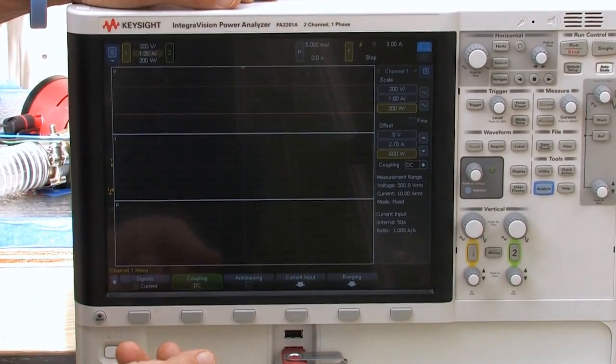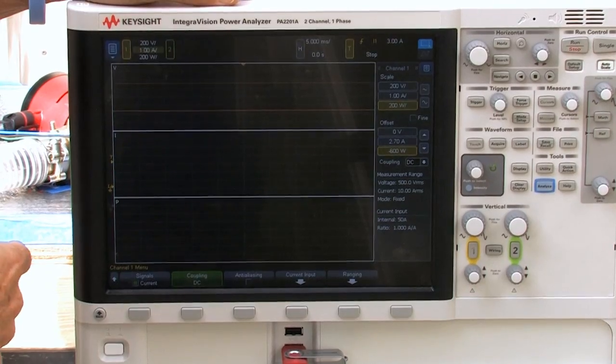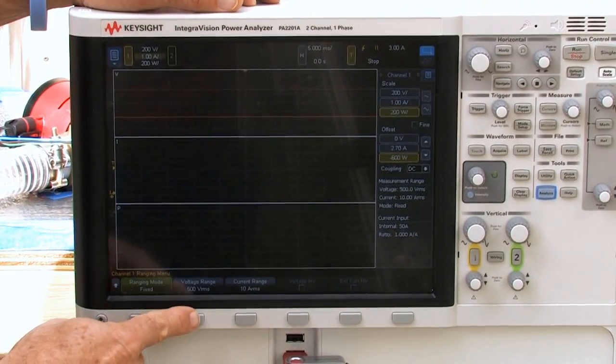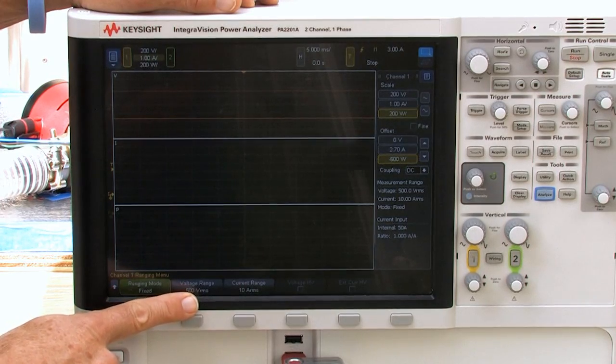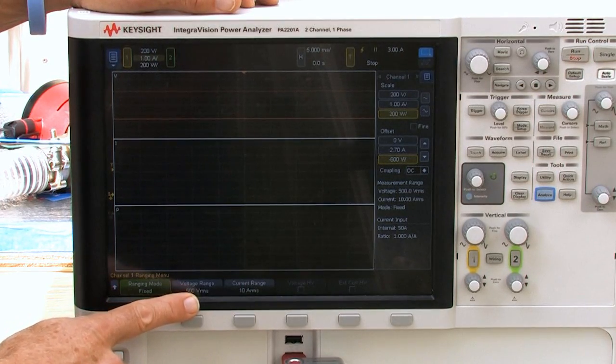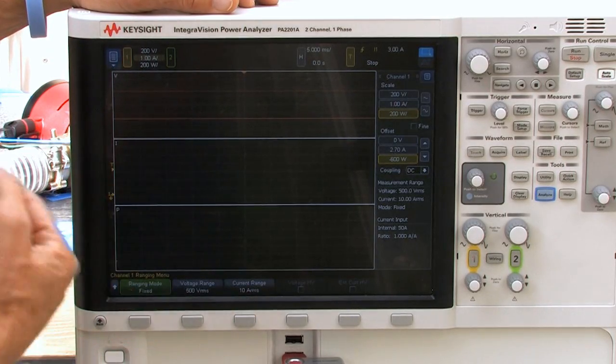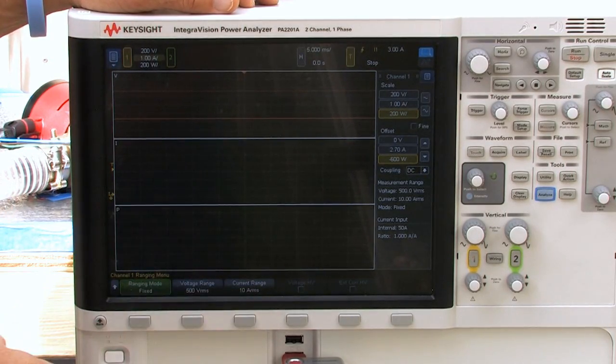First thing I want to do is just check on the ranging, so I'm going to hit range and check that we have 500 volts range set up and the 10 amp range. I'm expecting the current pulse to be somewhere between 5 and 10 amps, so we've got that set up.